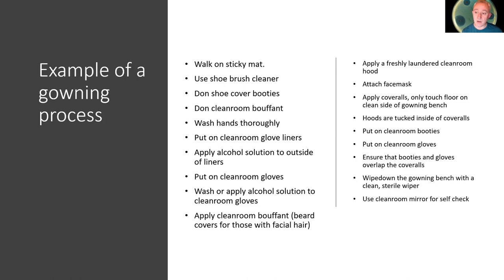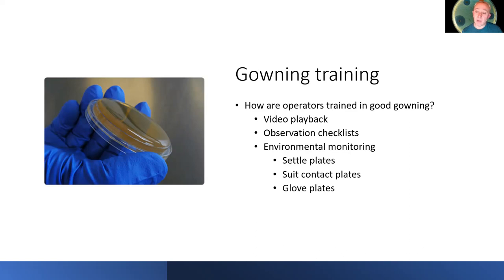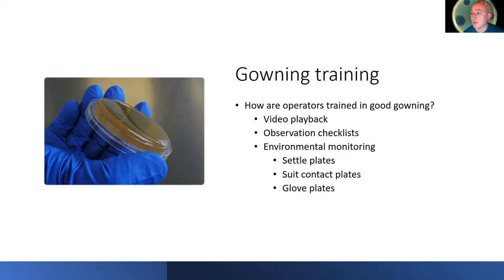Effective gown training is really important for understanding the contamination of the operator, particularly for trainees. Video recording showing the trainee what they're doing and then matching that with best practice video is useful. Observational checklists should be used, and environmental monitoring should be undertaken at the point of gown training and then for periodic gown qualifications, which would typically be every six months. We'll use settle plates to show what might be deposited during the gowning process, suit contact plates after the gowning exercise, and finger plates to confirm whether the operator has an effective glove sanitization technique.